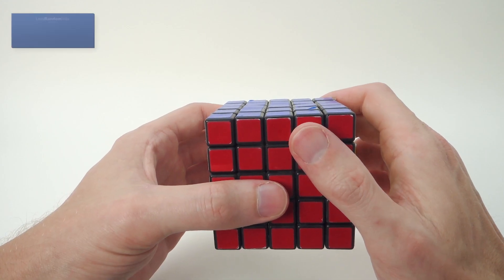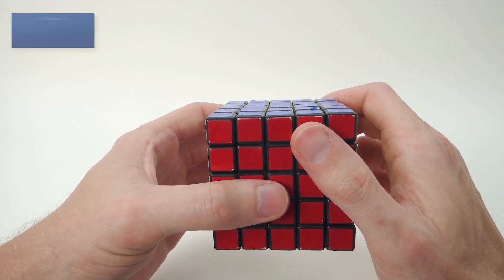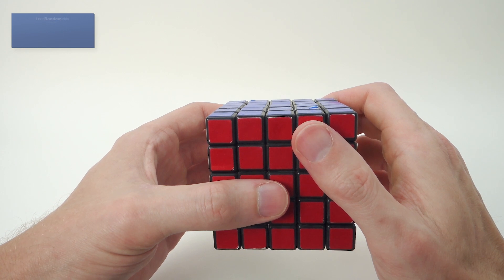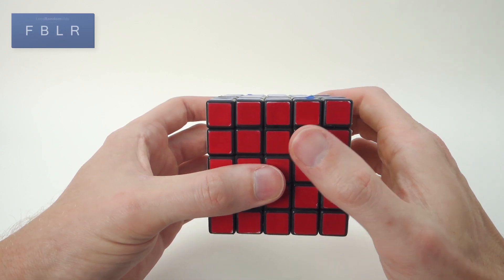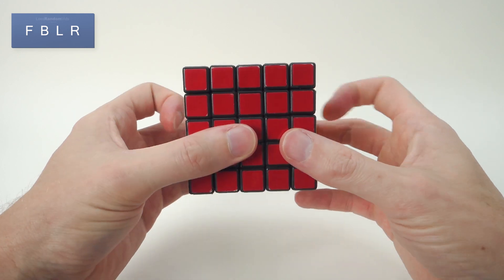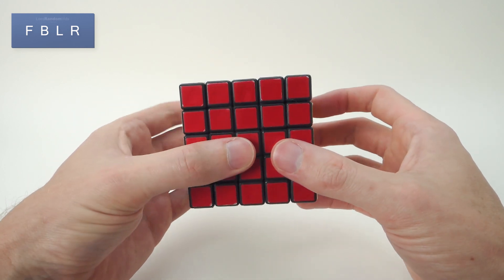As I explained in the 4x4 video, when using algorithms with a 4x4 or a 5x5, I just need to explain a little addition. We still use F, B, L, R, etc. for front, back, left, right.